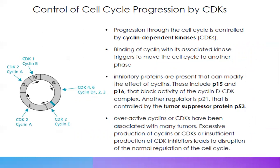Control of cell cycle progression is carried out by CDKs — cyclin-dependent kinases. These kinases are important for driving the entire cell cycle. They are a kind of order or signal that the body gives to the cycle to proceed. Numerous cyclins are involved in all phases. Binding of a cyclin with its associated kinase triggers the cell cycle to move to the next phase. Inhibitory proteins such as P15 and P16 are present that can modify the effect of cyclins by blocking activity of the cyclin-CDK complexes.